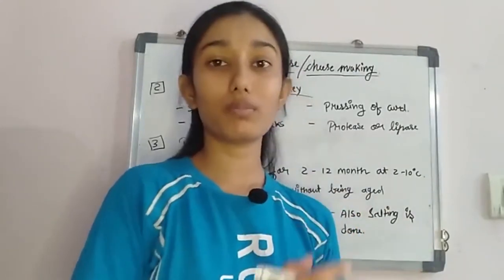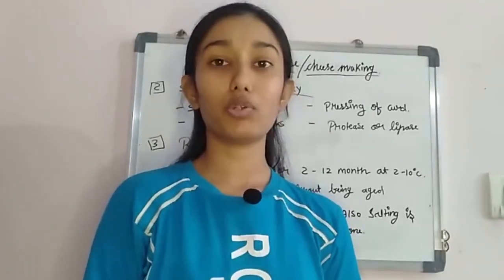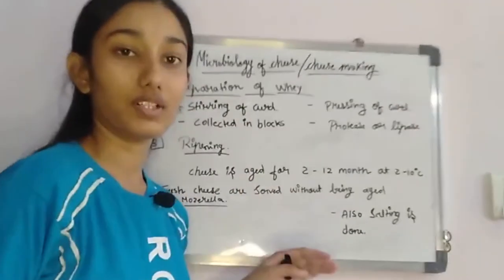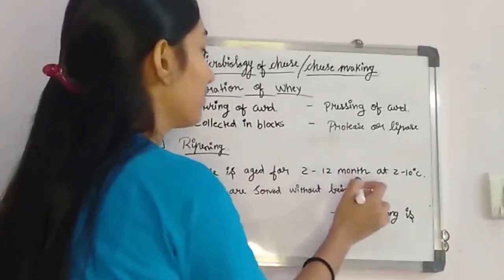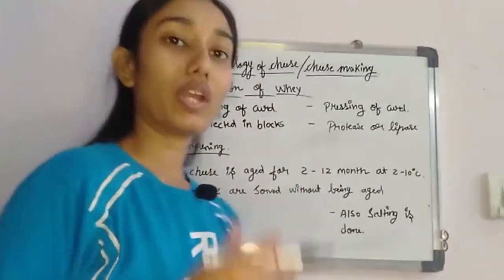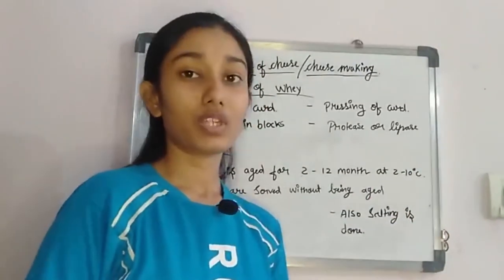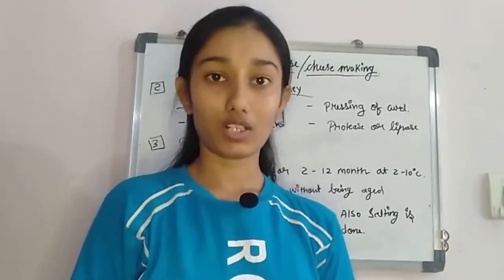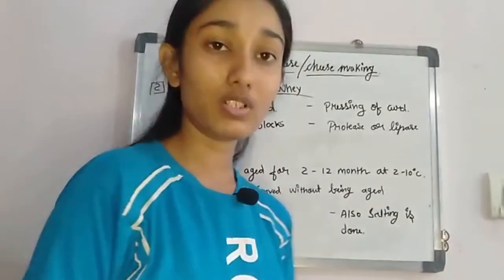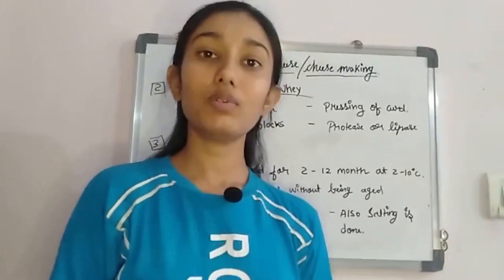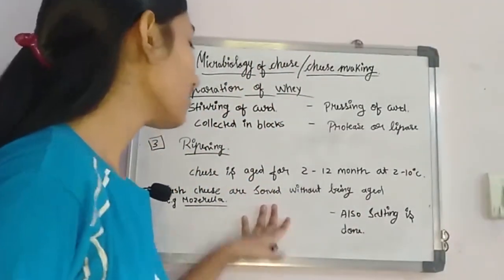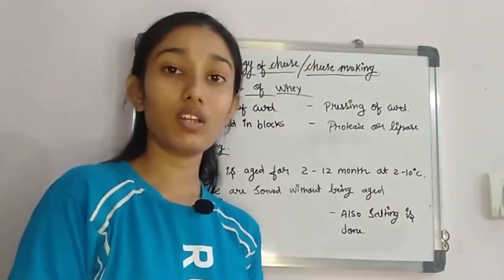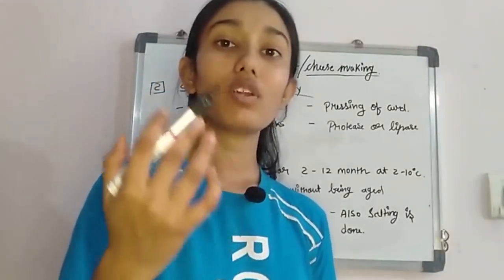Ripening is the stage where the curds are available and the cheese in it undergoes flavor development — it develops a cheesy taste or texture. The curds are ripened by aging. Cheese is aged for 2 to 12 months at 2 to 10 degrees Celsius. During aging, flavor development occurs because of the organisms present in it and the rennet enzyme, which also works during this time at this temperature. Some cheeses that are fresh-served, like mozzarella, are served without being aged or are aged for a very little time.